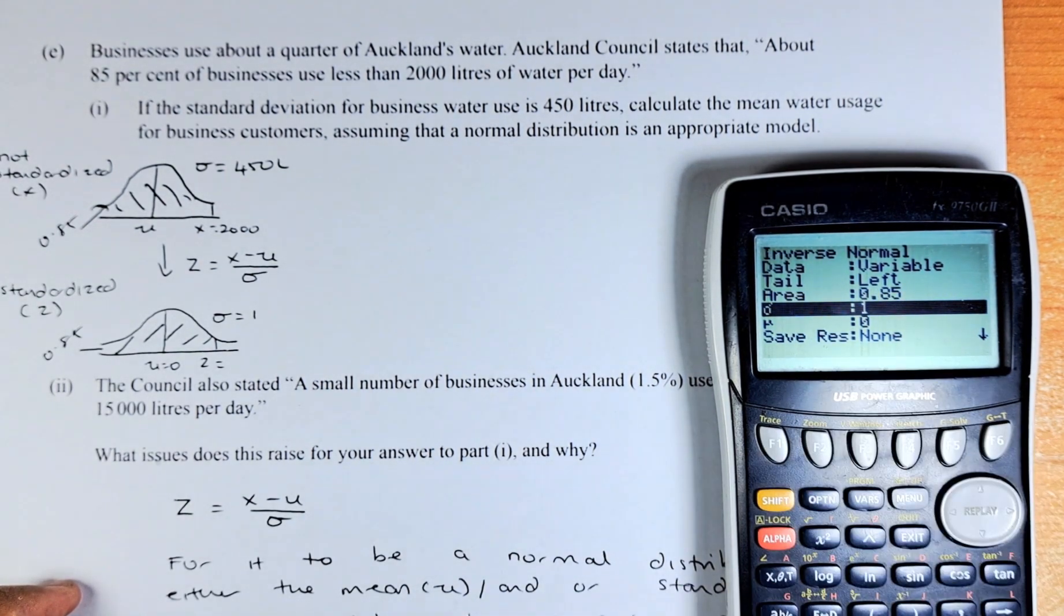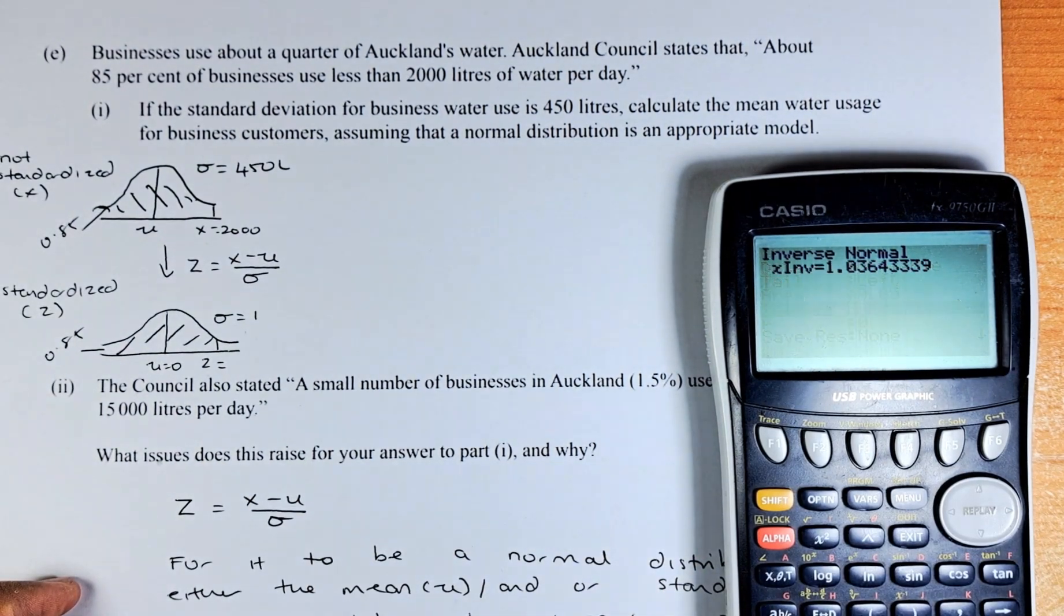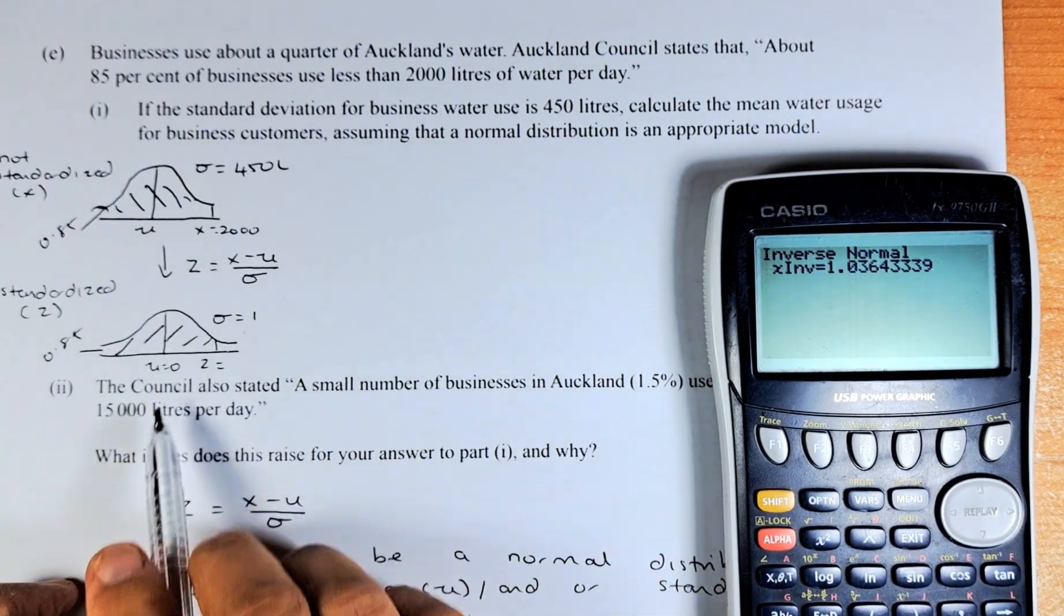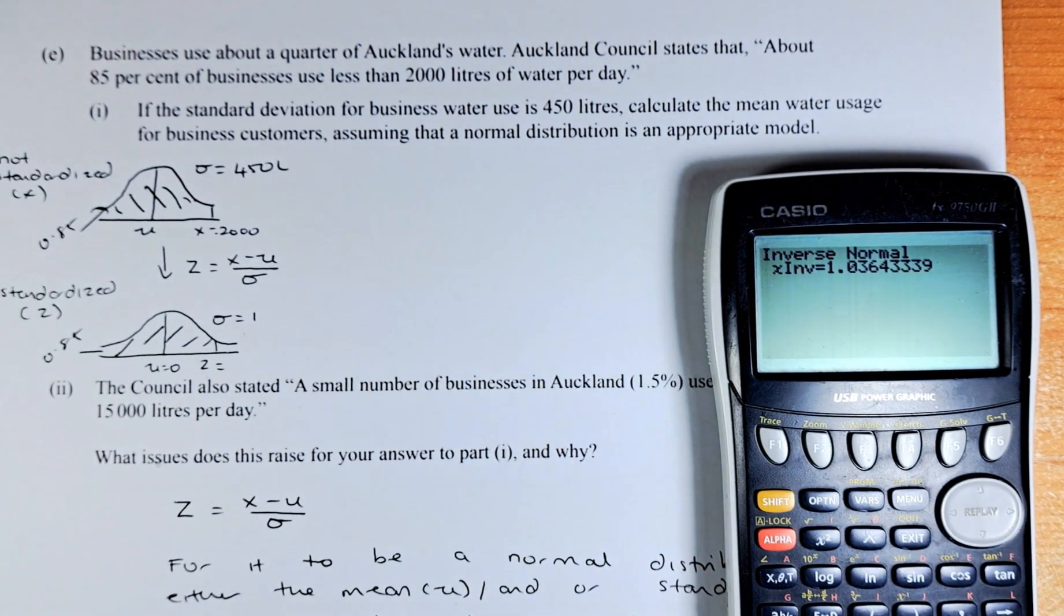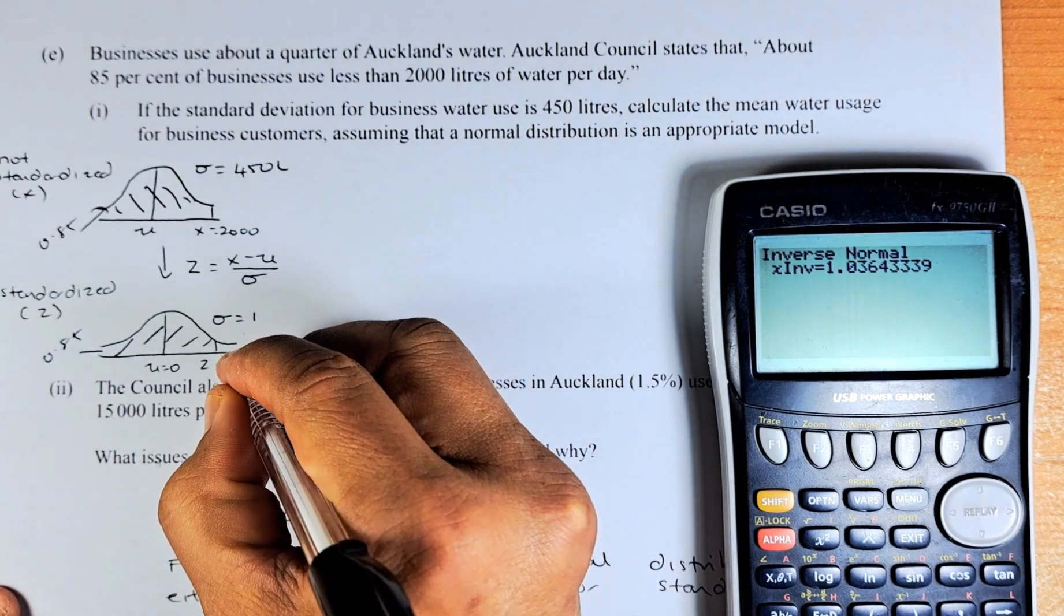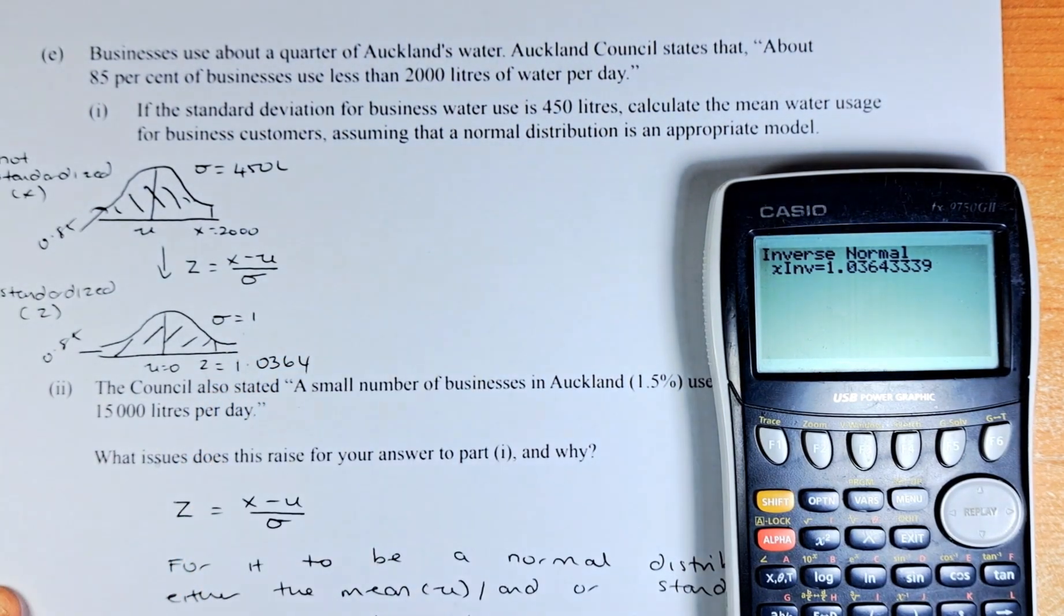And then the sigma is going to be 1. It's already 1. Execute. And the standard deviation was also 0. And then the answer is going to be 1.0364. So I'm going to put that as 1.0364.